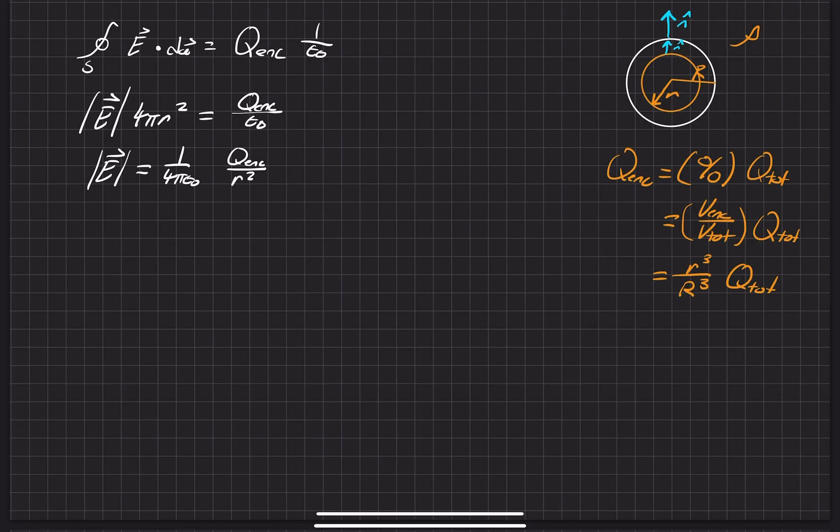Let's write it down explicitly and make that substitution. 1 over 4 pi epsilon naught, the Q enclosed is little r cubed over big R cubed times Q total. Now we can cancel out some stuff. These go away, and then we just have a single little R on top. 1 over 4 pi epsilon naught times r over R cubed times Q total.